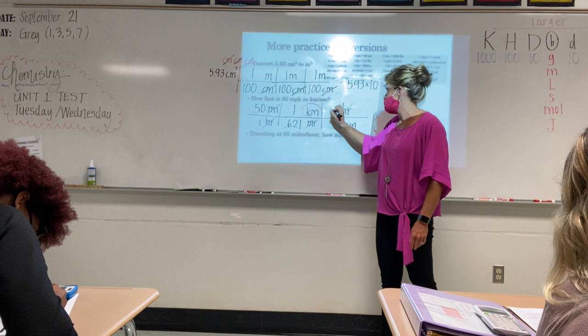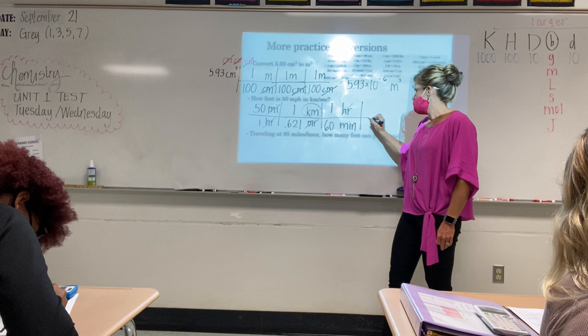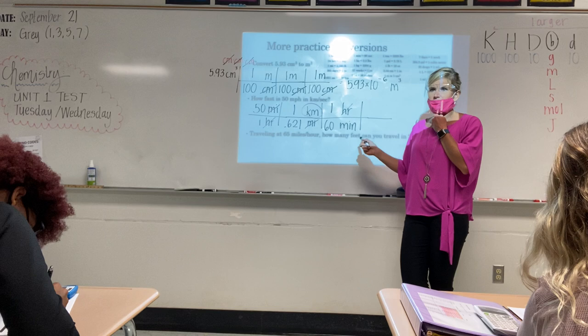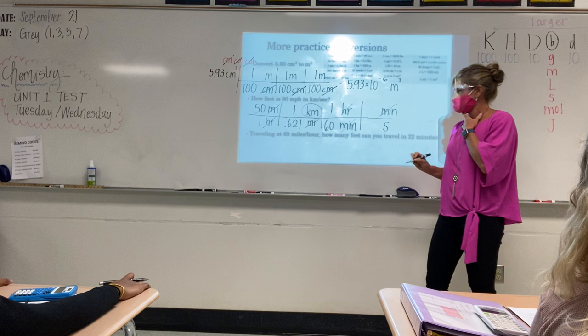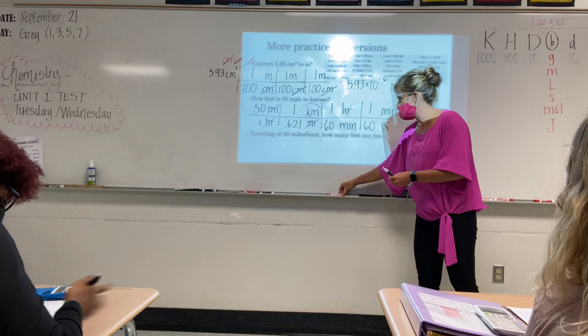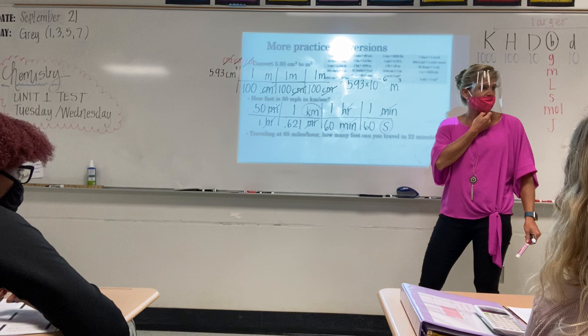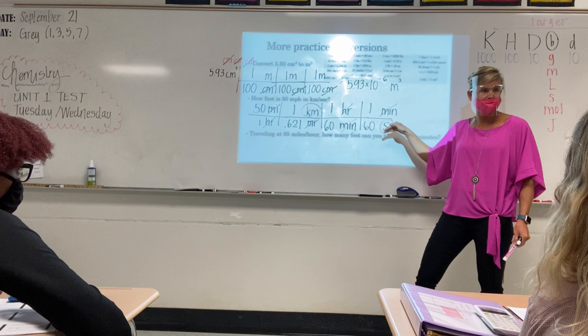Do we know how many seconds are in an hour? Let's go to minutes first just to practice. Hours cancels. Fill in your conversion factor: one hour is 60 minutes. Set up one more because we're not to seconds yet. If minutes is on the bottom, where should minutes go next? On the top — minutes cancels. Now I can go to seconds: one minute is 60 seconds. Our seconds are the unit we need.